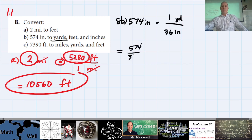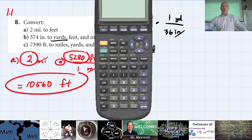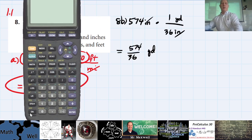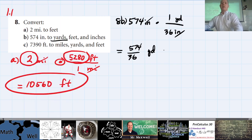So 574 divided by 36 gives us yards, because the inches cancel out. You'll need your calculator — it's going to be a decimal. I get 15.9̄4̄ repeating yards.